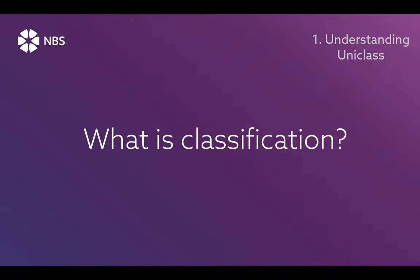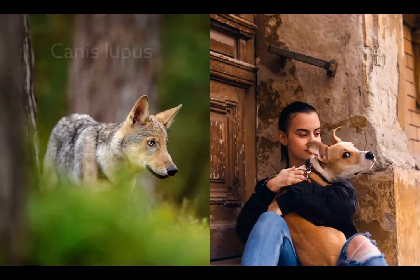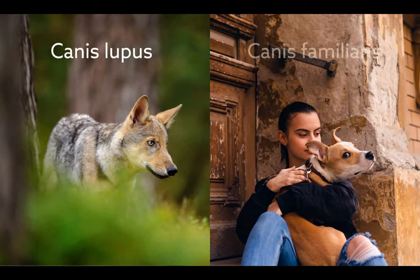Before we get further into UniClass — I've said that UniClass is a unified classification system. Let's look at what classification is for. Classification is a means of structuring information, which makes it easier to search, find, and share that data. And there are all kinds of industries that use classifications.